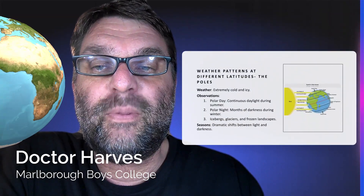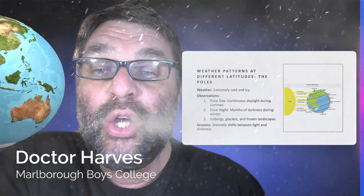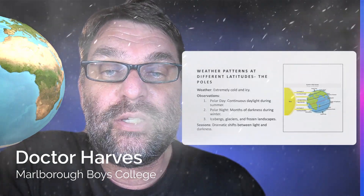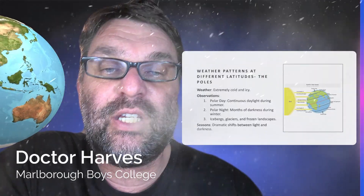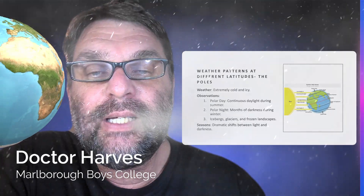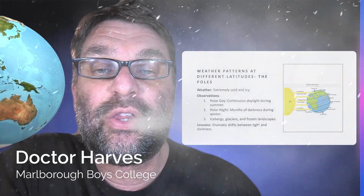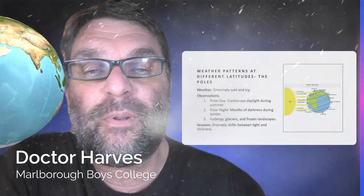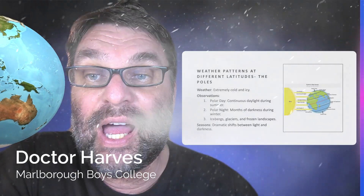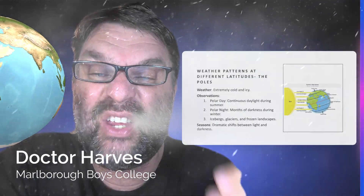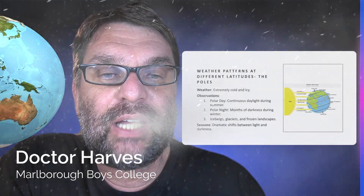At the poles — the north pole (the Arctic) and the south pole (the Antarctic) — you get extremely cold conditions. For half the year there's a polar day with continuous daylight during summer, and then a polar night during wintertime with basically six months of darkness. You get lots of icebergs, glaciers, and frozen landscapes. The seasons are essentially your light and your dark — dramatic shifts between six months of light and six months of darkness.